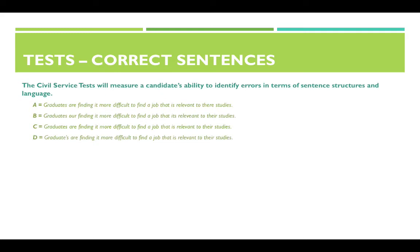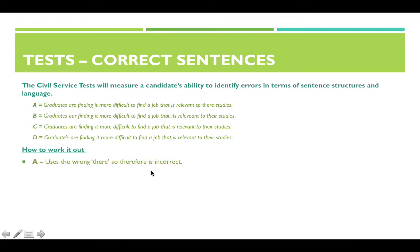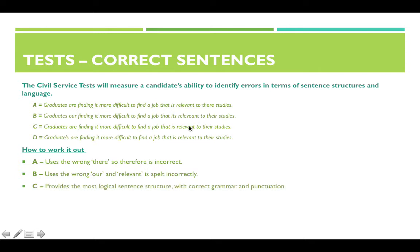Correct sentences: the Civil Service test measures a candidate's ability to identify errors in sentence structures and language. You need to work out which sentence is correct based on grammar and punctuation. Sentence A uses the wrong 'there', so it's incorrect. Sentence B uses the wrong 'hour' and 'relevant' is misspelt. Sentence C provides the most logical structure with correct grammar and punctuation. Sentence D — 'graduates' should not have an apostrophe, so it's incorrect. The answer is C.